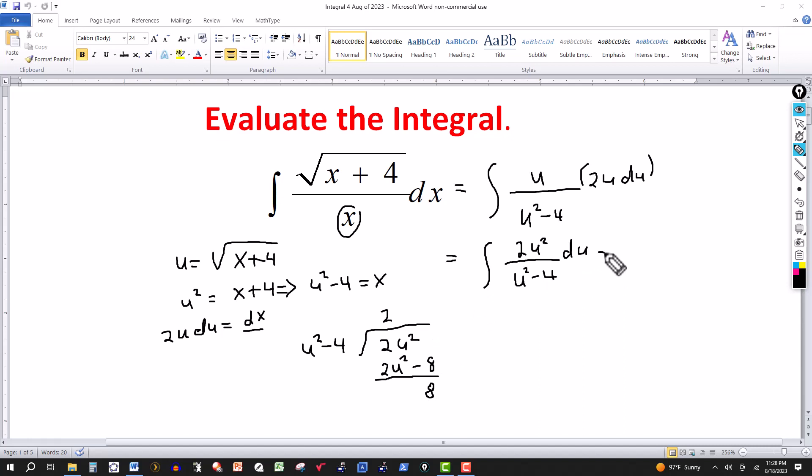And then this can be written as 2u squared divided by u squared minus 4. The quotient is 2 so I have a 2 here. Then I get a remainder of 8. So this will be plus, and the 8 will be over the divisor which is u squared minus 4.